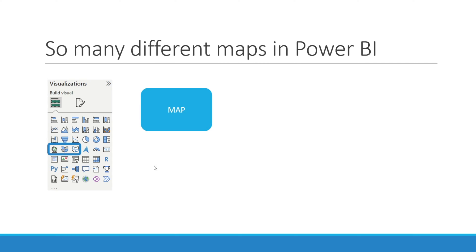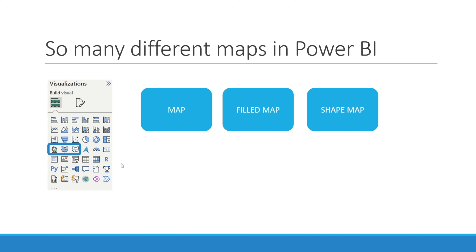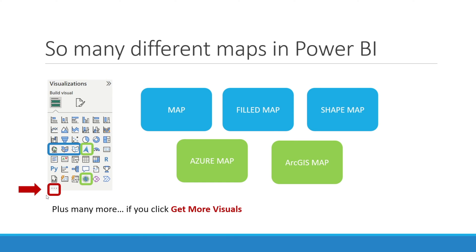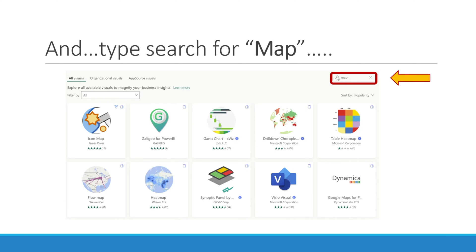Hi everyone, my name is Isabel Asuslawati. I'm a Power BI enthusiast with decades of business experience. There are so many different maps in Power BI. We have map, field map, and shape map. We also have Azure map and ArcGIS map. And if you click that button to get more visuals and type 'map', you get all these options. What's the difference between each map? Which one is most useful? Which one is the easiest to learn? If you want to know the answer to those questions, you have come to the right place as we will cover each one in this video.